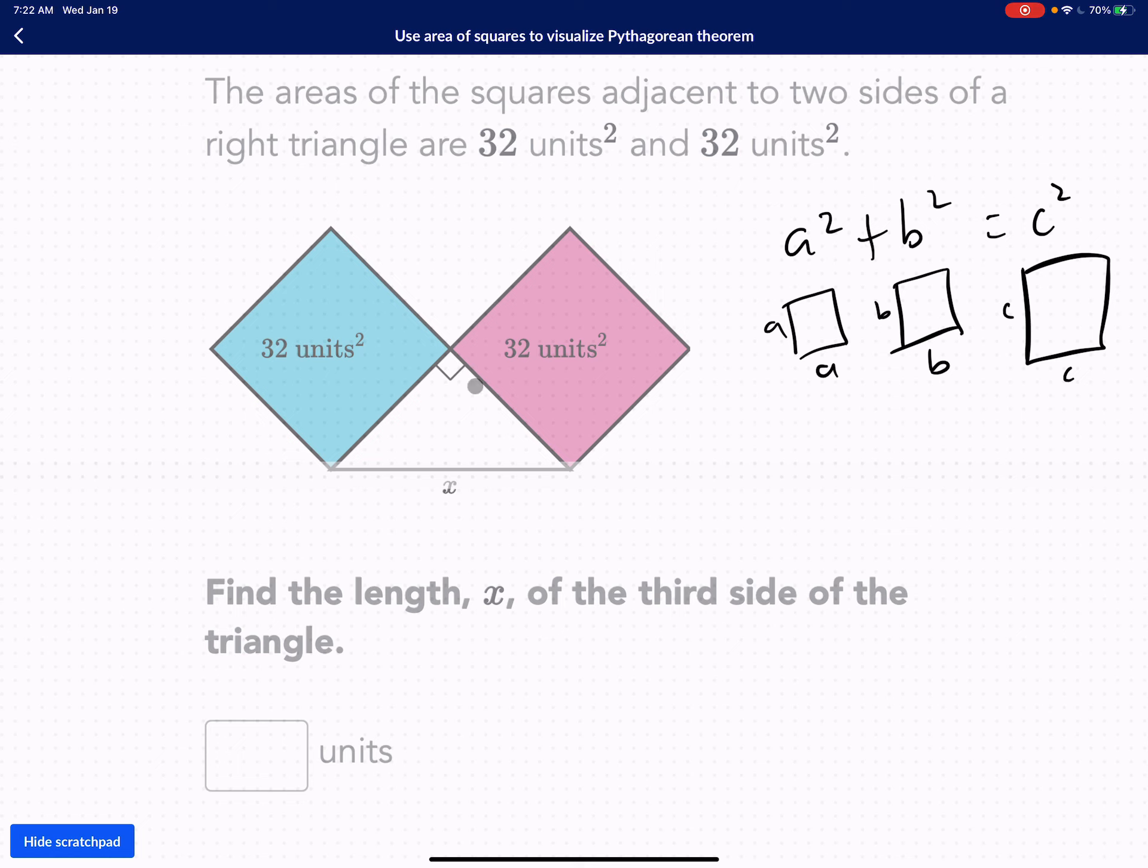So if you take a look at this right triangle, the areas of the square adjacent to the sides of a right triangle are 32 units and 32 units. So this unit is going to be 32 units, and this is also 32 units. If this is 32 units and this is 32 units, this bigger square, I'm going to try to estimate that a little bit so you guys can see it.